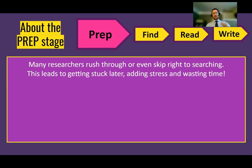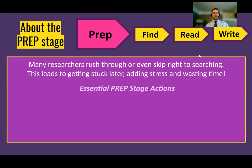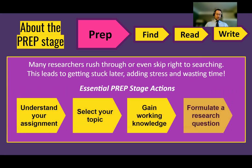The prep stage is one where a lot of researchers rush through. Sometimes the temptation is to skip prep entirely and just go straight to finding stuff, which can lead to getting stuck later. It can add a lot of stress and wasted time to your project. Proper prep is very important. As you're planning to prep, here are four important things: understanding your assignment is essential — you need to know when something is due, what you're creating, what kinds of sources are accepted, who your audience is. From that, you go and select your topic.